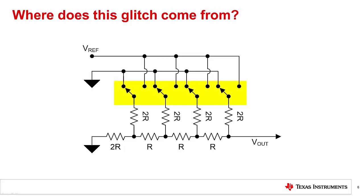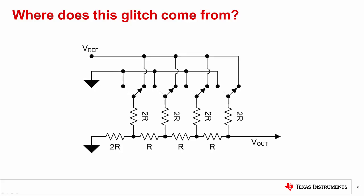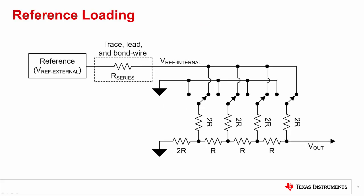Recall that R2R architectures have a series of switches that will toggle the 2R legs of the ladder to either ground or the voltage reference. An important thing to remember is that this results in a code-dependent load on the reference. Let's consider when all the switches are in the left position. Here, there is no load on the reference. But when they switch to the right position, the maximum load is placed on the reference.